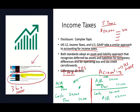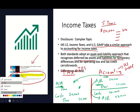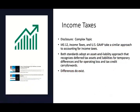In future years, that $20,000 receivable will reverse — this creates a temporary difference that reverses over time. So this is what we mean when we say they adopt the asset-liability approach. This is the simplest explanation I can give you. The assumption is you already know it. Differences do exist, but to a great degree both US GAAP and IFRS use the same approach — the asset-liability approach.